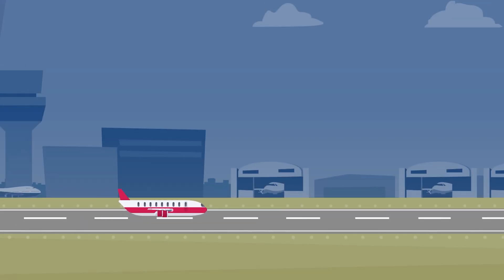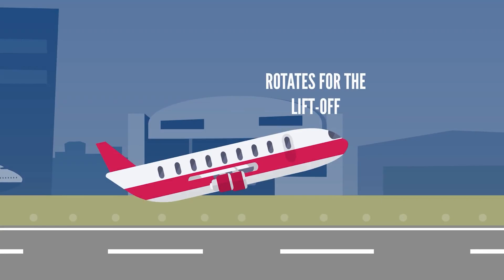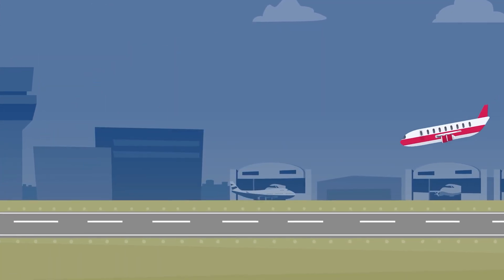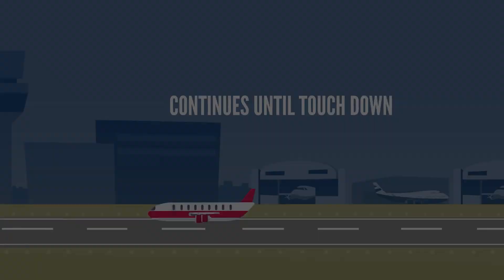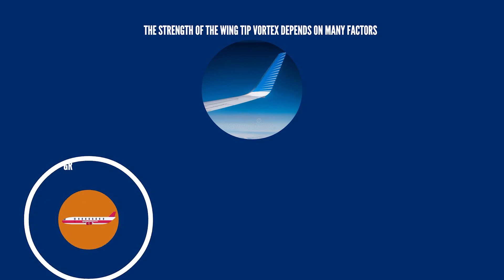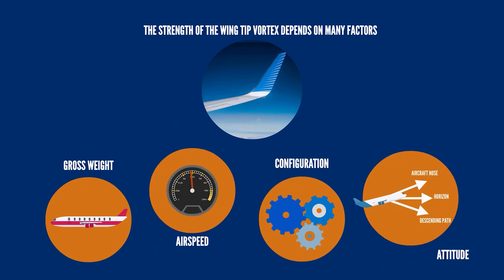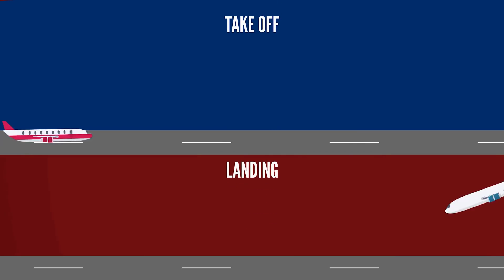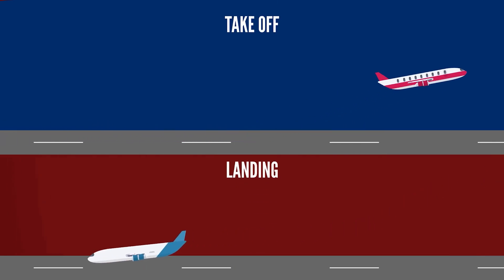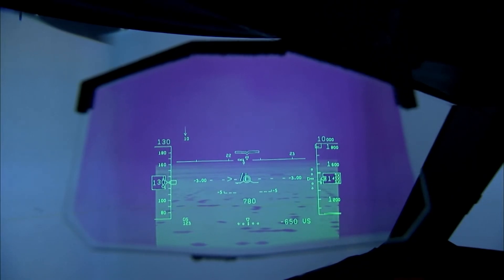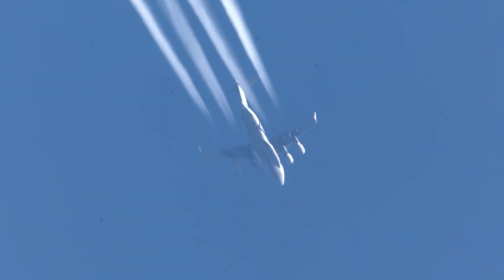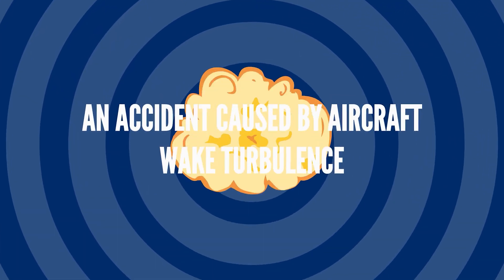The first tip vortexes appear when the aircraft rotates for liftoff during the takeoff phase and continue until it touches down on the runway. The strength of a wingtip vortex depends on many factors including gross weight, airspeed, configuration, and attitude. Vortexes are at their fullest when an aircraft is at the point of takeoff and landing. That's why pilots — particularly those flying behind a much larger aircraft — must be cautious during these phases of flight, or a catastrophe might happen.